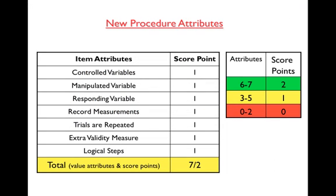This is the list of attributes for a new procedure. You'll see that there are seven attributes, each one scoring one point maximum, for a total of seven attribute points. You'll see that the range of attributes gives you the score points. The maximum score allowable is two points. And if you earn between six and seven attributes, then that would be your score. What we're going to do now is look at each one of these attributes a little bit more in detail so that you can know how you can maximize the points that you earn.